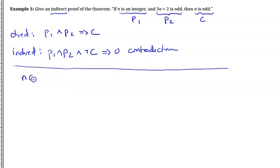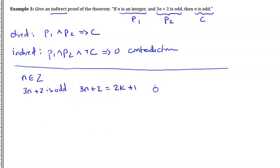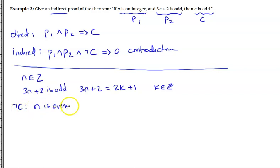So we know N is an integer — that's the first premise. We know 3N plus 2 is odd — that's the second premise. Because 3N plus 2 is odd, I can write it as 2K plus 1 where K is an integer. Now for the negation of the conclusion: C says N is odd, so not-C means N is even, and I'll write N as 2L where L is an integer.